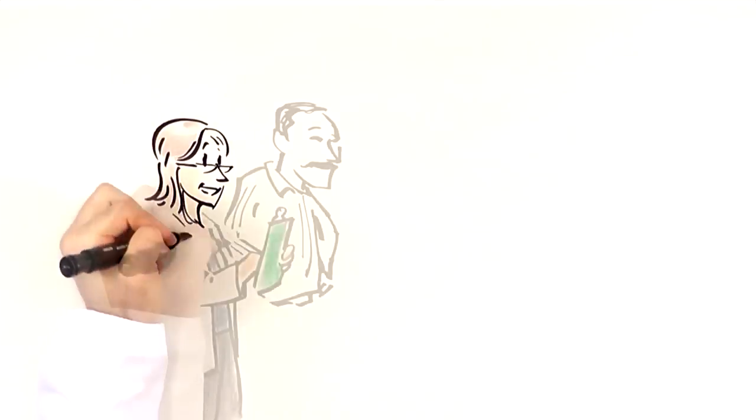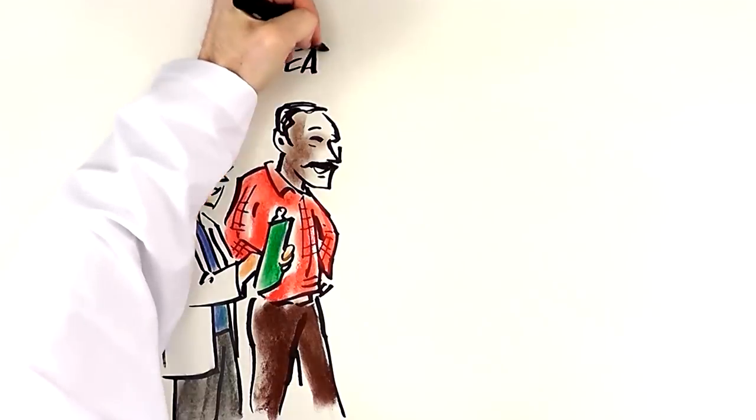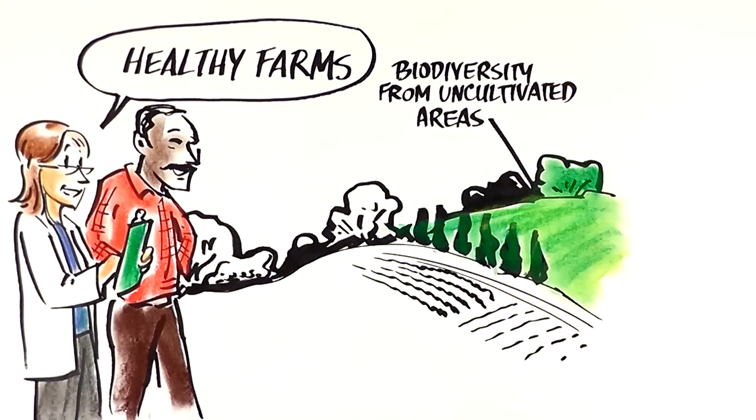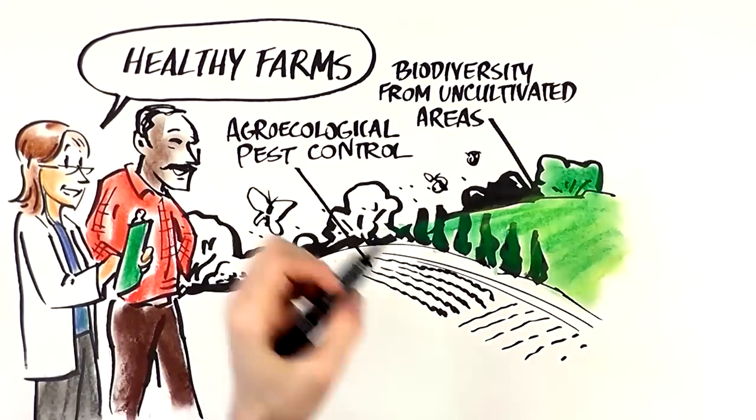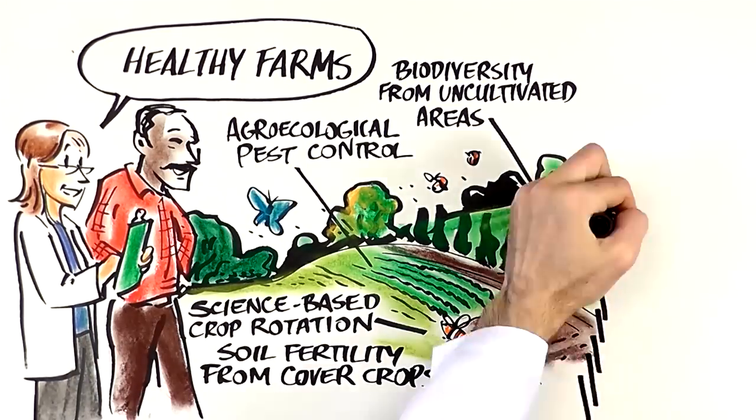There's a better way. At the Union of Concerned Scientists, we call it Healthy Farms. Healthy Farms use the science of agroecology to control weeds by working with nature, not against it. Healthy Farms are sustainable and cost-effective.